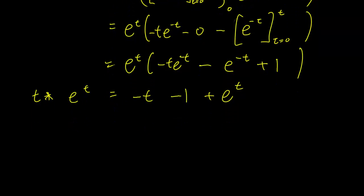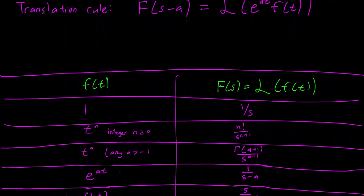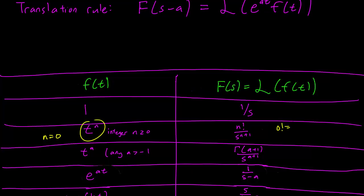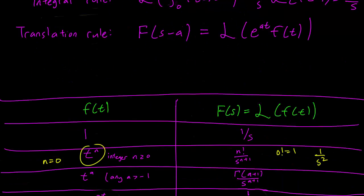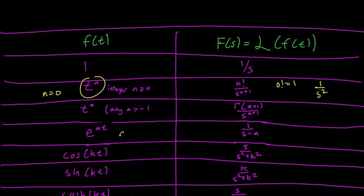So let's check. We have the Laplace transform of t, and we look at our table. For the Laplace of t, we need n equals 1, so 1 factorial over s squared gives us 1 over s squared. The Laplace transform of e^t — consulting our table, we need a equals 1, so we have 1 over s minus 1.